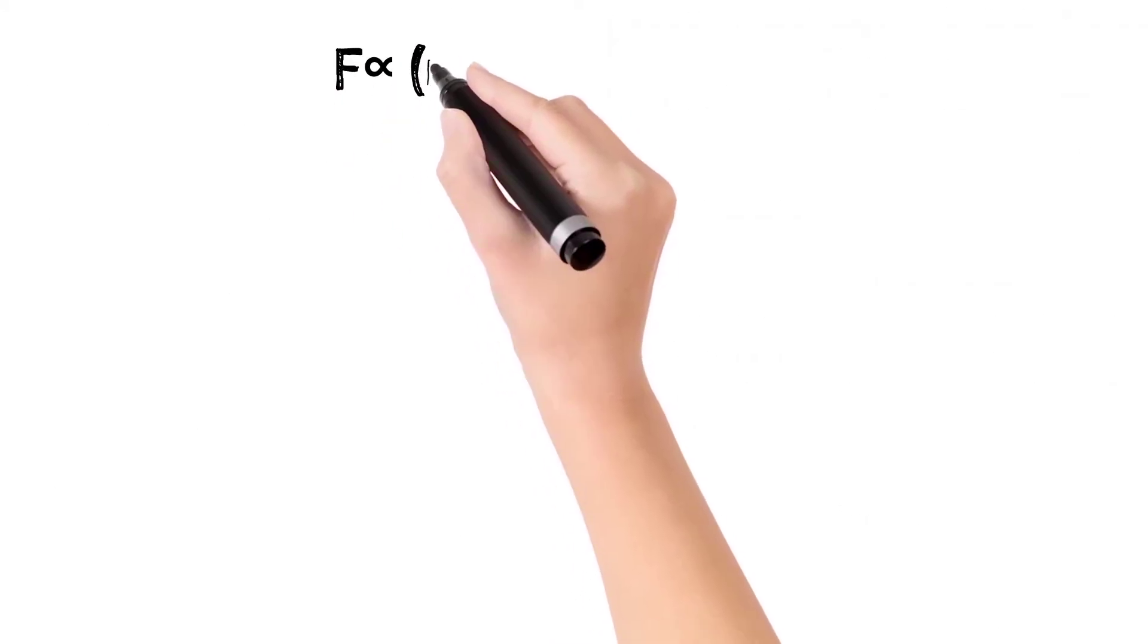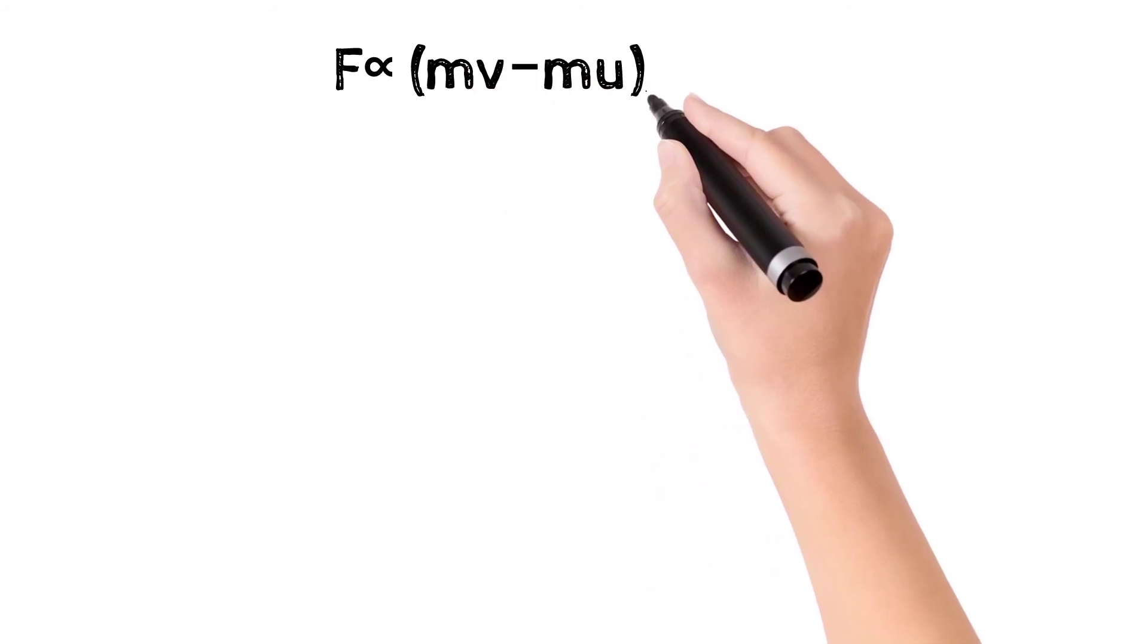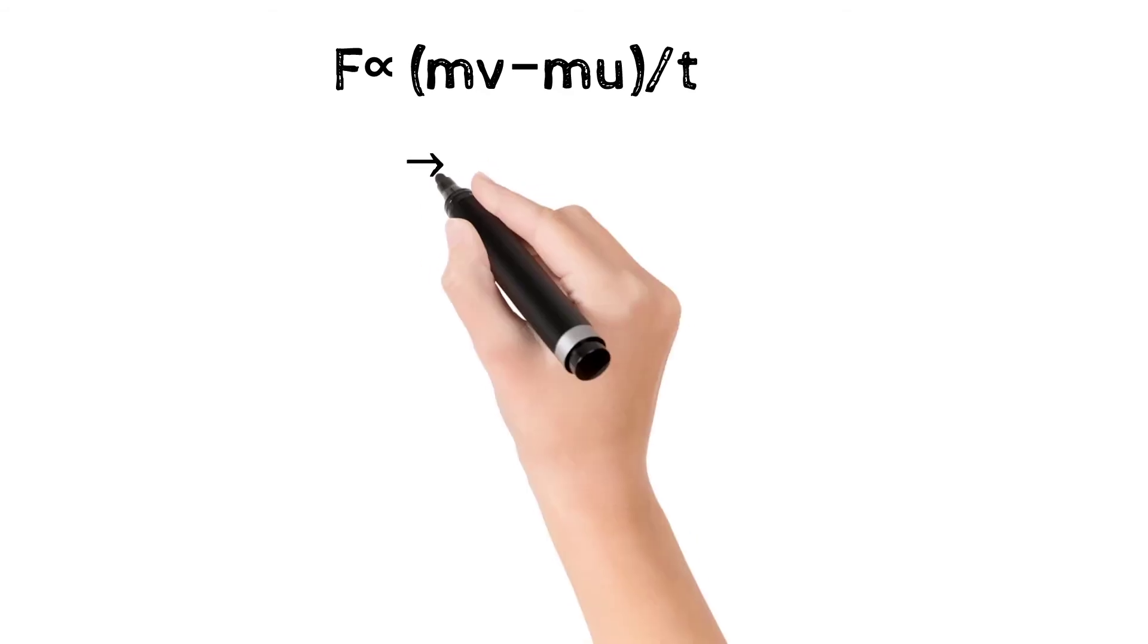So F is directly proportional to momentum, which can be written as mv minus mu, divided by t.